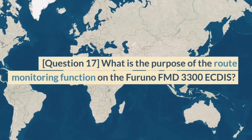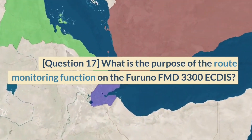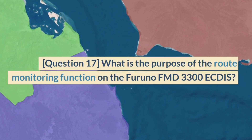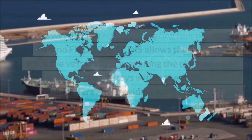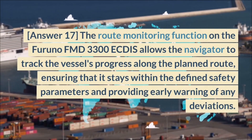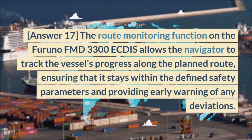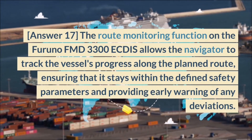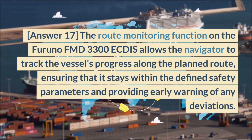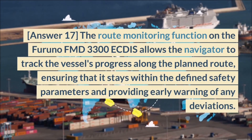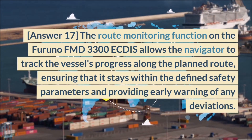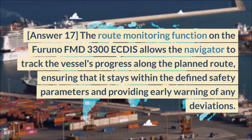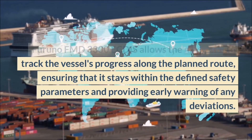Question 17. What is the purpose of the route monitoring function on the Furuno FMD 3300 ECDIS? Answer 17. The route monitoring function allows the navigator to track the vessel's progress along the planned route, ensuring that it stays within the defined safety parameters and providing early warning of any deviations.